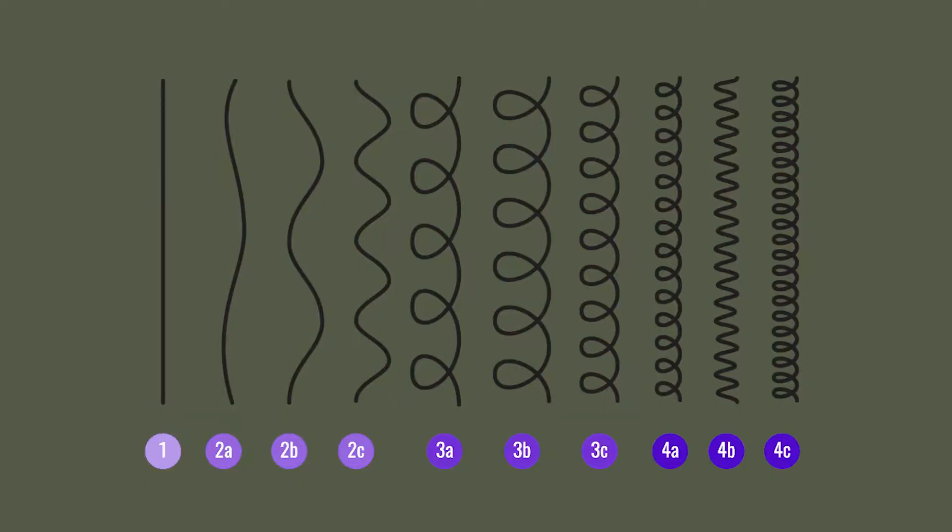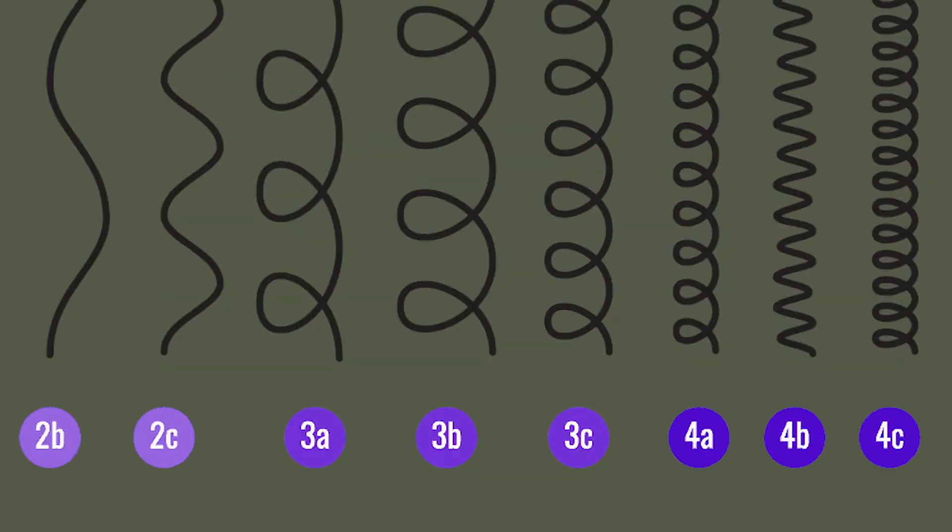Within each of these four main hair types comes a subtype, which is distinguished by a letter — for example, 1A, 1B, 1C, and so on, all the way from one through four. These three subtypes, A through C, tend to determine the diameter, width, or density of your hair type. So this just takes your hair type and narrows it down even further to really find that precise hair type that you have.